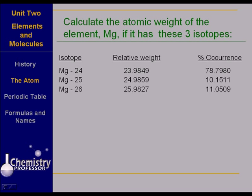Now the best way that I know to do it is to show you a sample problem. Let's calculate the atomic weight of the element magnesium if it has these three isotopes: magnesium-24, magnesium-25, and magnesium-26. I want you to notice that the relative weight of each of the isotopes is just a little less, just a hair less than its atomic mass number.